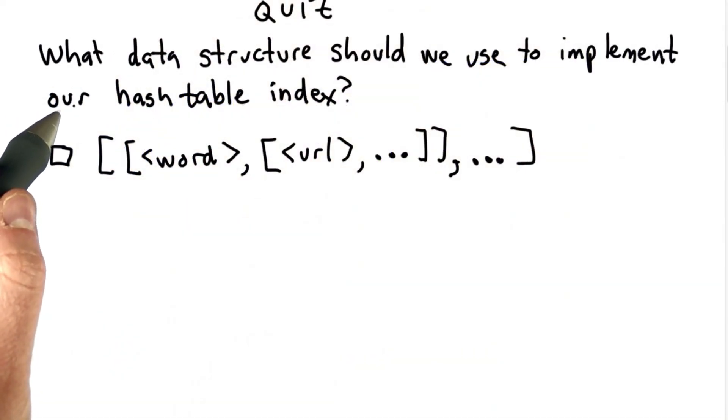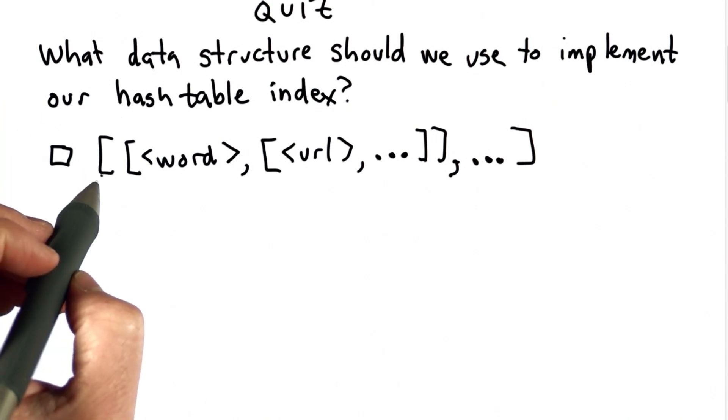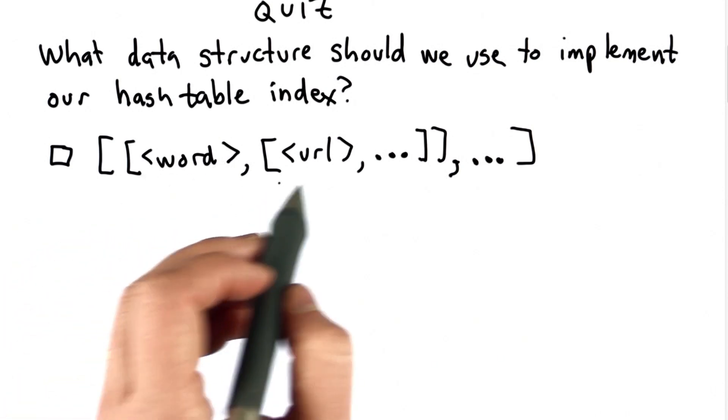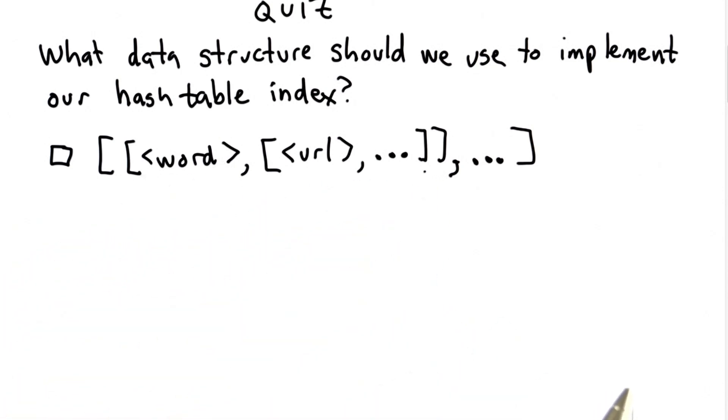So the question is, which of these data structures would make most sense to implement the hash table index? The first choice is a list, where the elements in the list are a list where the first element is a word, and the second element is a list of URLs, where that word appears.